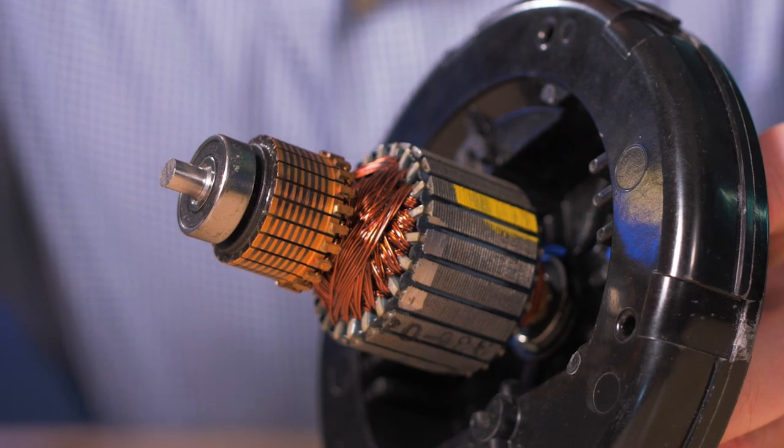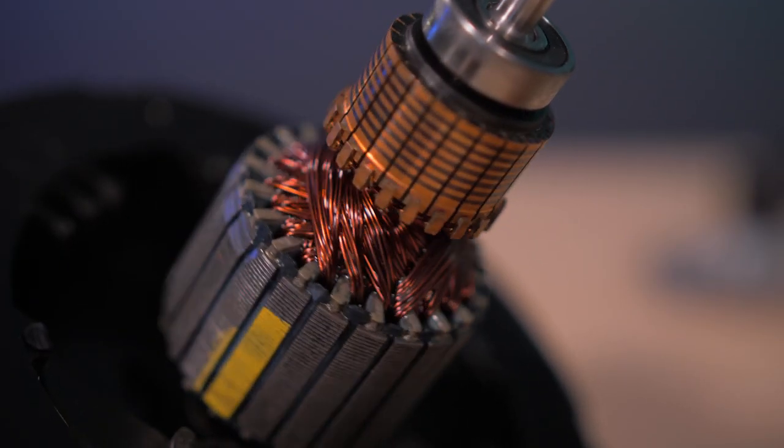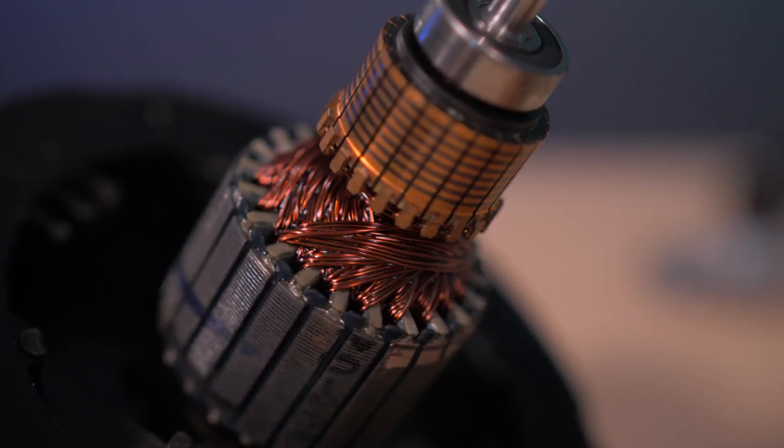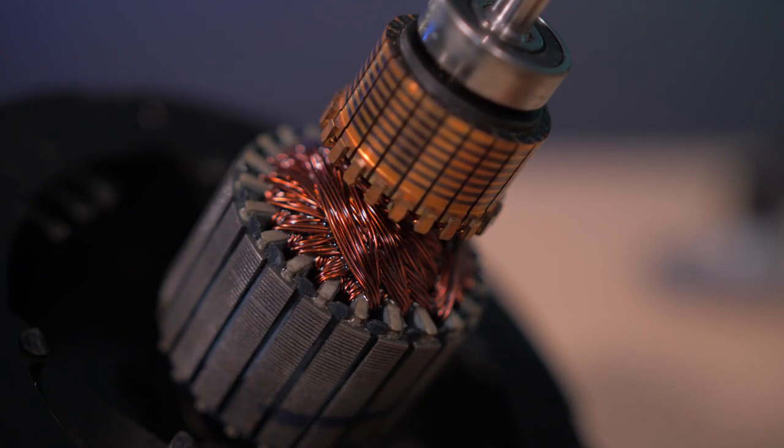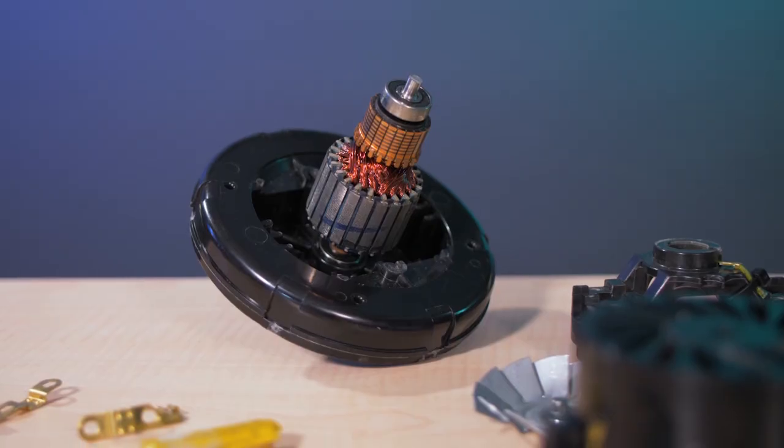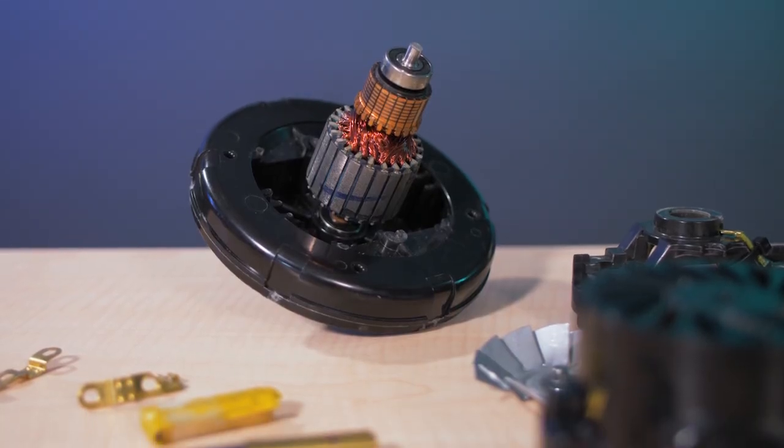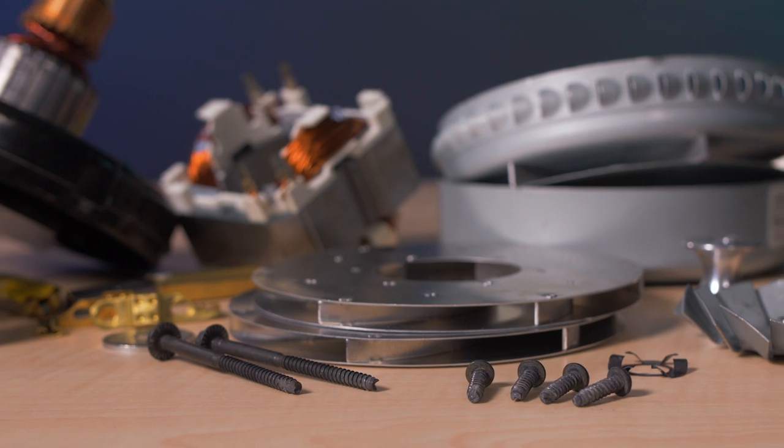A point to note about that rotor is that we can see it is divided into 22 segments. That equates to a little over 16 electrical degrees per segment. So if you're curious about how frequently the brushes switch their rotor connections, that happens with a little over 16 degrees of rotation.